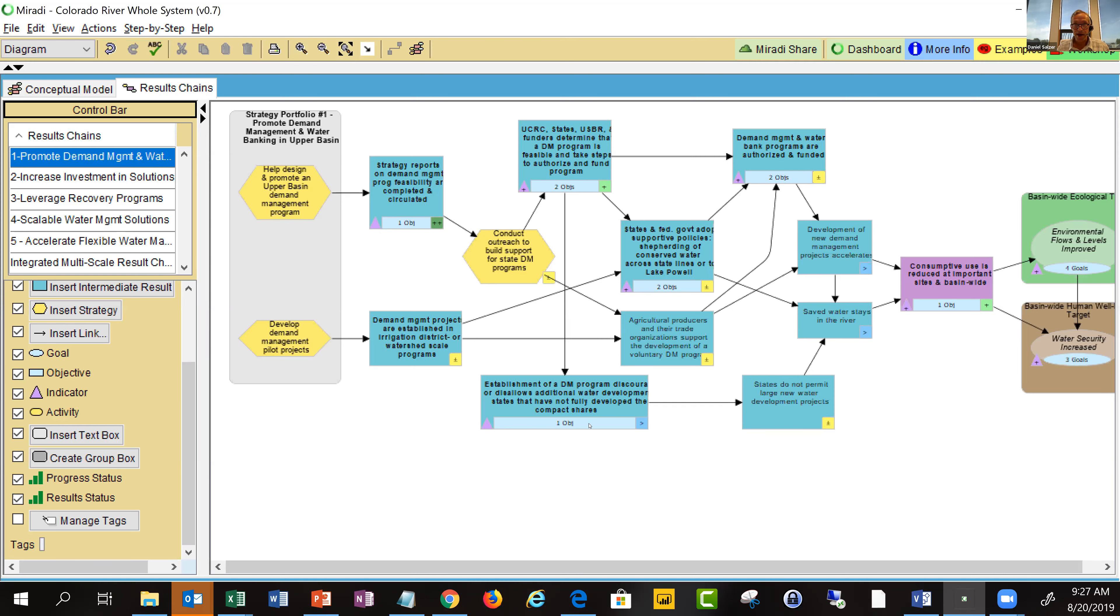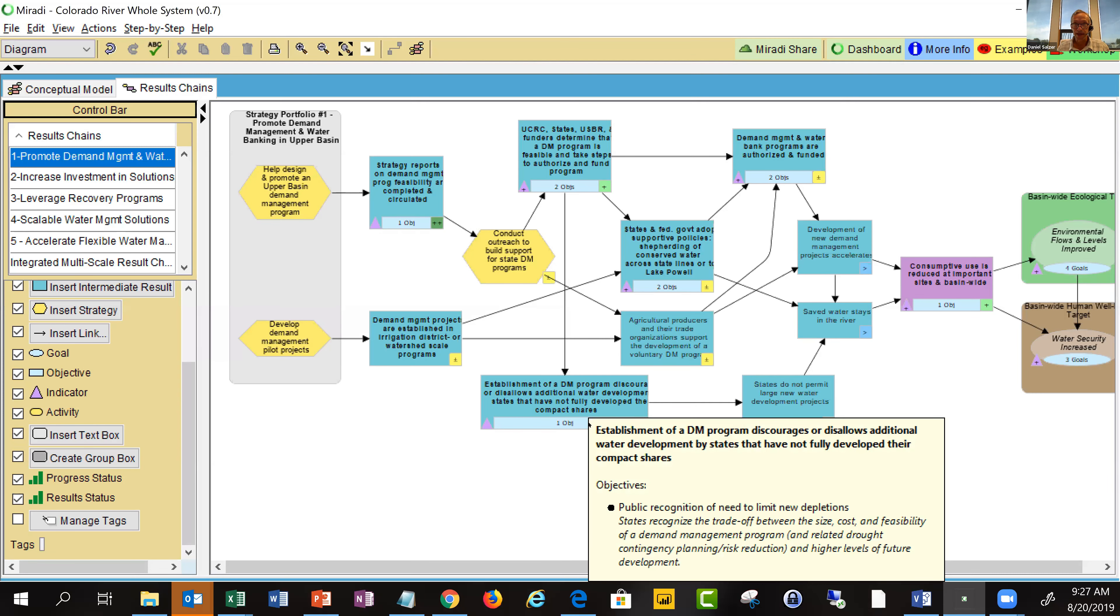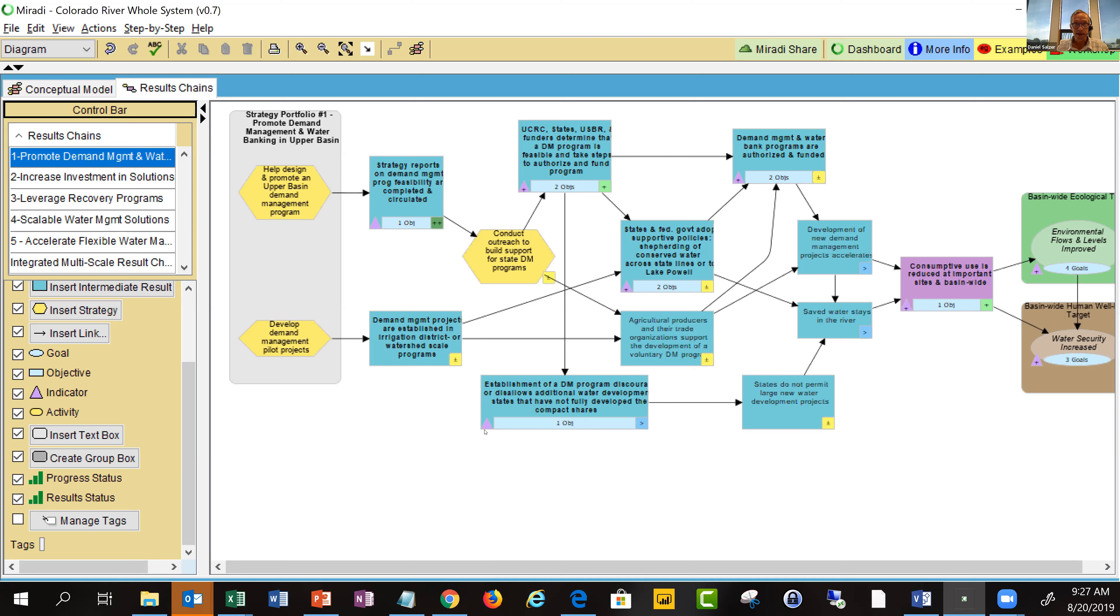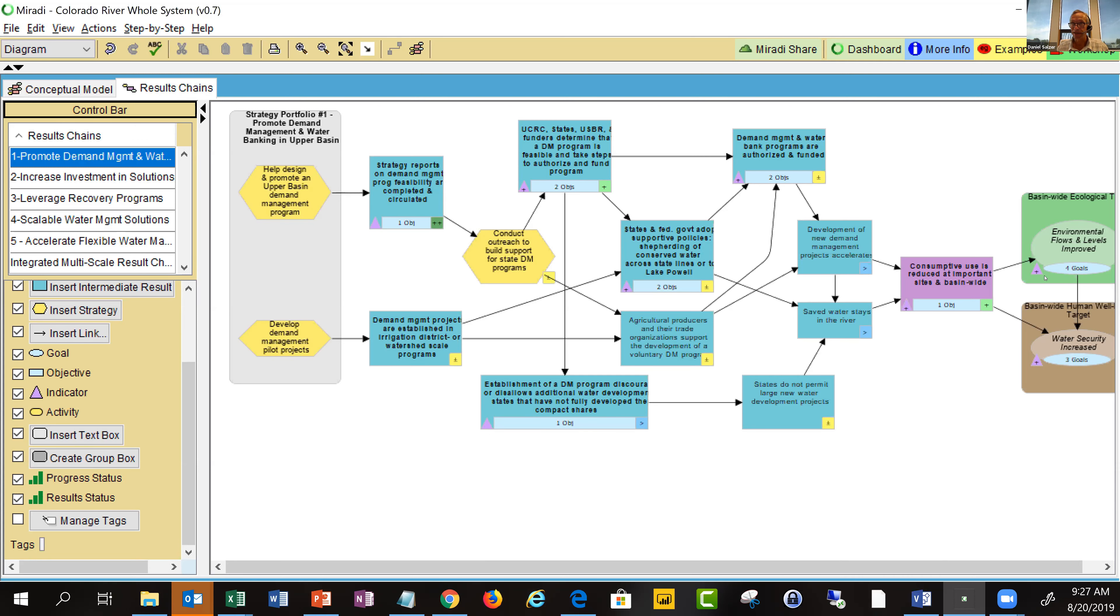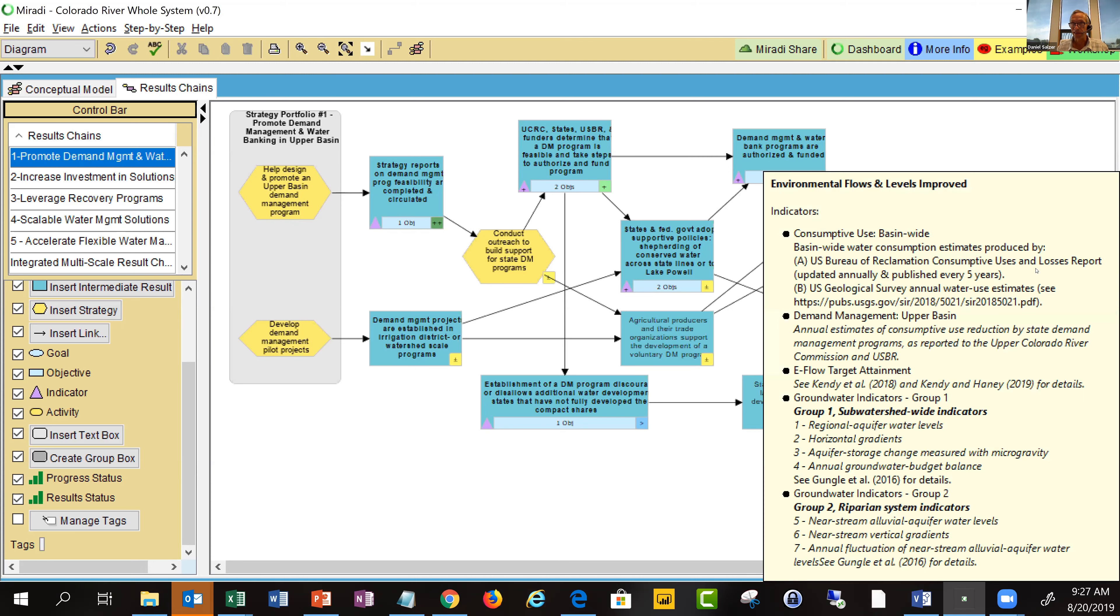This is one of the results chains that Patrick and his team developed in Miradi desktop. In addition to laying out the logic from left to right, they also have measurable outcome statements or objectives in the Miradi terminology. If you position the cursor over these individual symbols, you'll see the different objectives and corresponding measurement indicators.